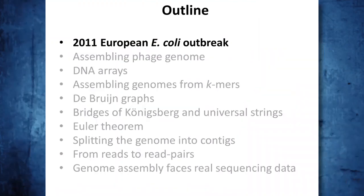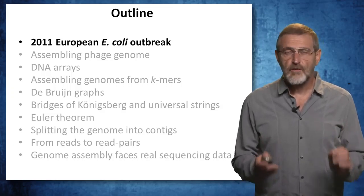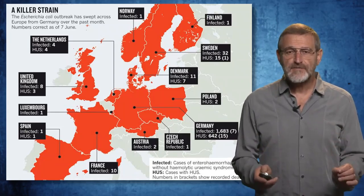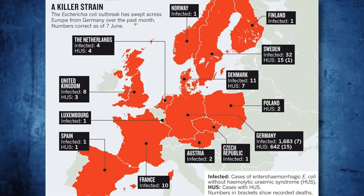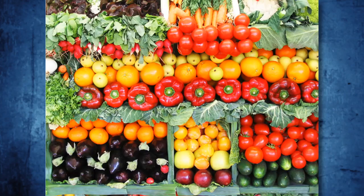One of the biggest news in 2011 was the European E. coli outbreak. It started as food poisoning with bloody diarrhea, that often followed by kidney failure and death. The outbreak quickly spread from Germany to many European countries. And in the beginning, it was unclear what was the cause of the outbreak. The usual suspects in the case of outbreaks are different vegetables — but which vegetables? Cucumbers? Carrots? There are a lot of choices.